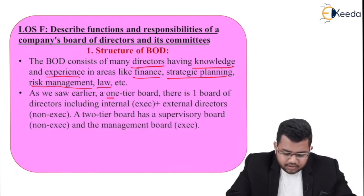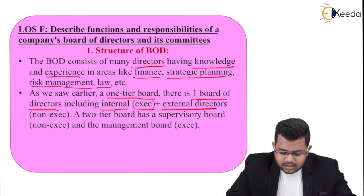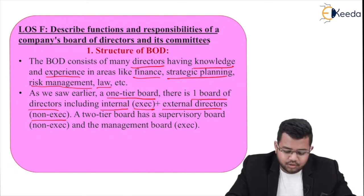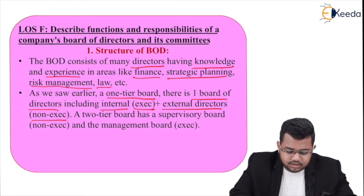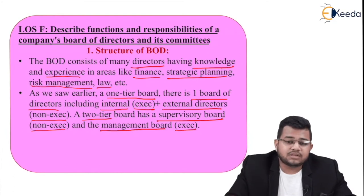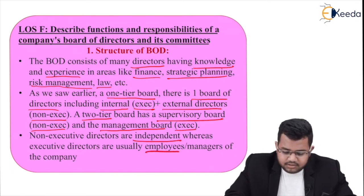A one-tier board has one board of directors including both internal (executive) directors as well as external (non-executive) directors. A two-tier board has a supervisory board comprising non-executive directors and a management board of executive directors. The supervisory board supervises the management board. Non-executive directors are independent, whereas executive directors are usually employees or managers of the company.